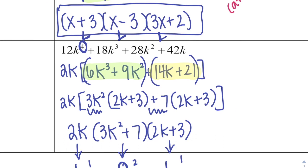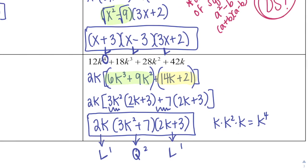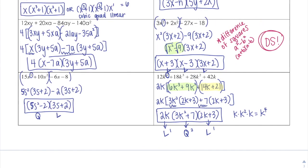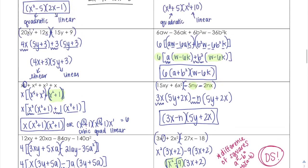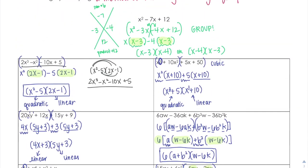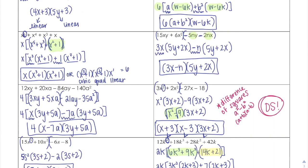The exponents in your factors should add up to the exponent in your original expression: k times k² times k equals k to the 4th — a quick way to check. Factoring by grouping is almost easier than setting up the X method because for a lot of people that's the hard part, and with 4 terms you don't have to do that anymore.